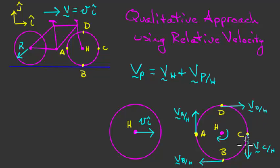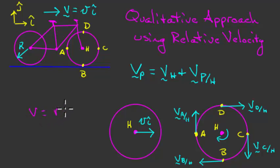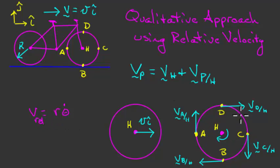Notice that all four points A, B, C, and D lie on the edge of the wheel — they are each one wheel radius away from the hub. Because of that, each of their relative velocities has the same magnitude. In polar coordinates, velocity has a term R·θ-dot; since R and θ-dot are the same for all points on the rim, all relative velocities share the same magnitude, which I'll call V_rel. Furthermore, each relative velocity is tangent to the wheel at its respective point.